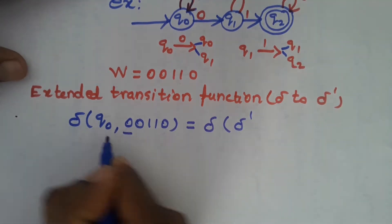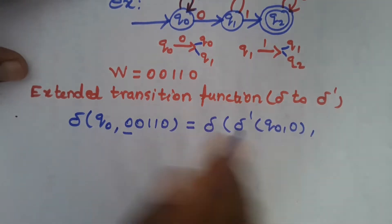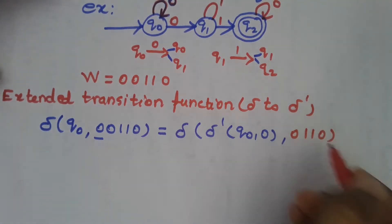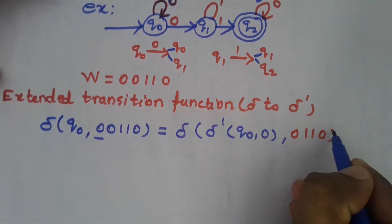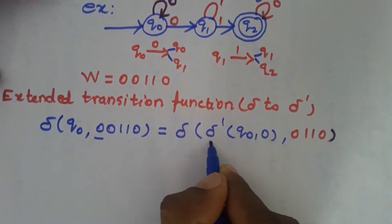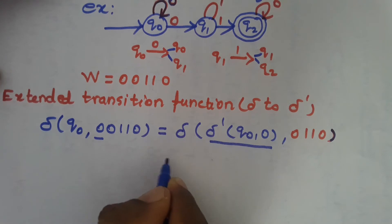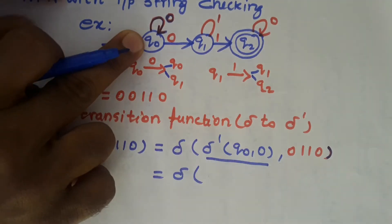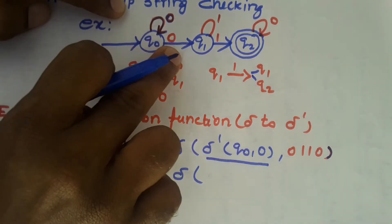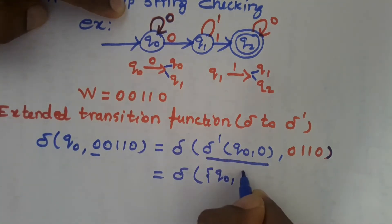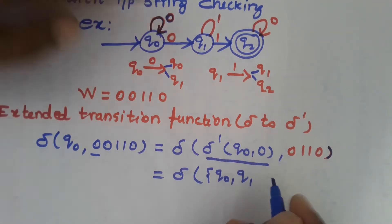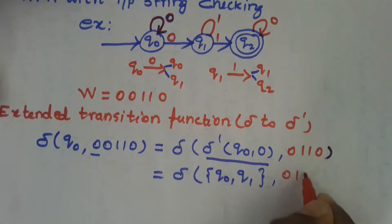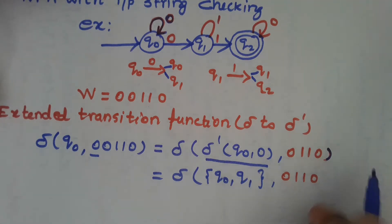When doing input string checking, you must follow the extended transition function. The first input symbol is 0, so we write delta dash of Q0 on 0, with the remaining input string 0, 1, 1, 0, 0, 0, 1, 1, 0. We derive the transition: delta of Q0 on 0. Checking the transition diagram, Q0 on 0 consists of states Q0 and Q1.